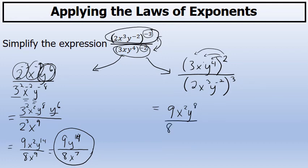In the denominator, two to the third power is eight. X to the third power to the third power — multiplying the exponents — is x to the ninth. And y to the negative second power to the third power is y to the negative sixth, after multiplying the exponents.